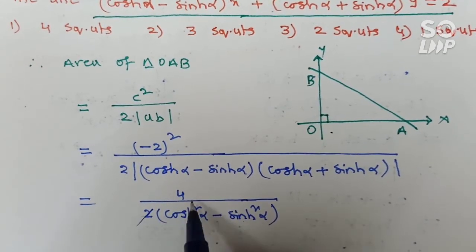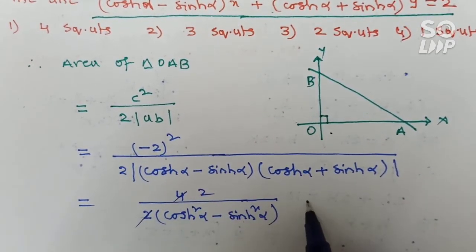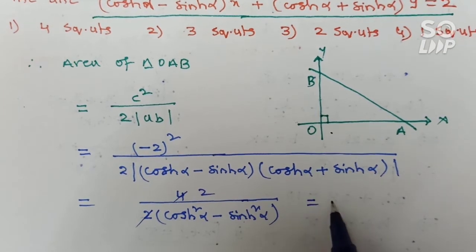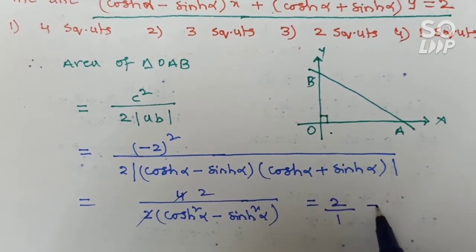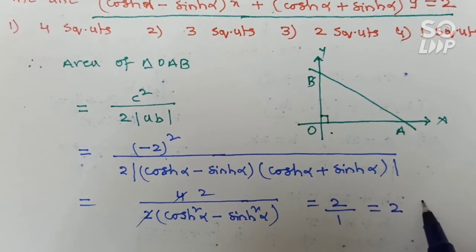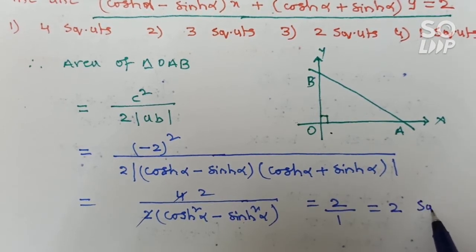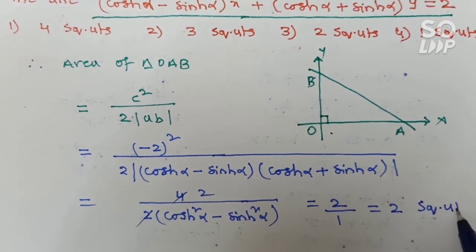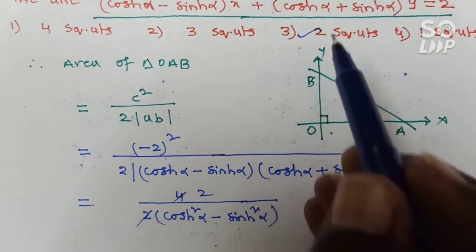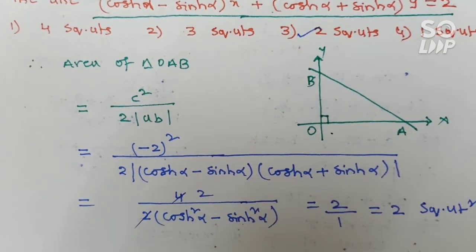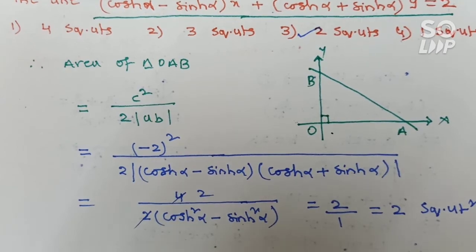So the area equals 4 divided by 2 into 1, which is 2 square units. Your answer is 2 square units. The third option is the correct answer.